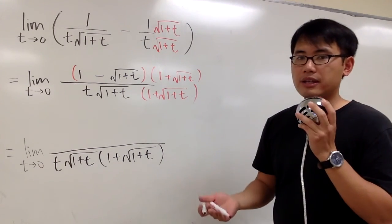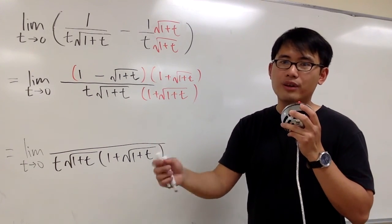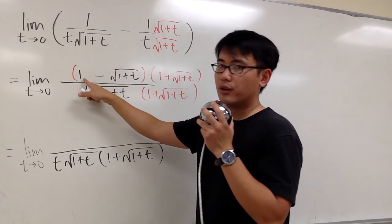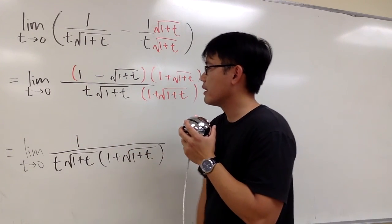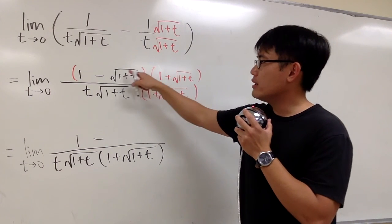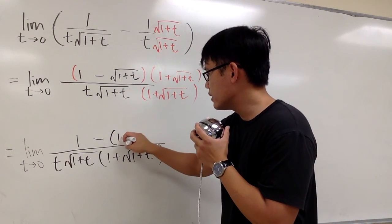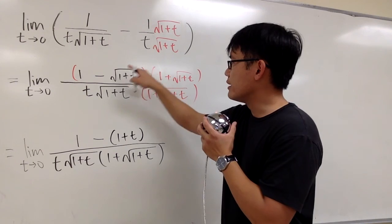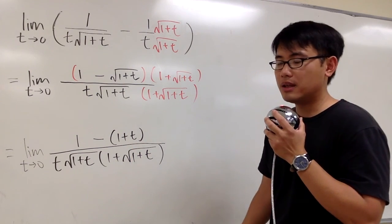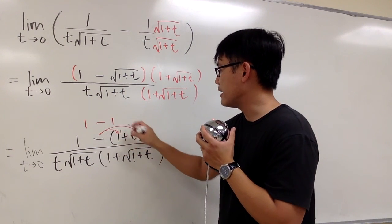For the top, when multiplying the conjugate, this is a minus b times a plus b, so the result is a squared minus b squared. We look at the first term, which is 1, and square it — 1 squared is 1. Then we subtract the second term, the square root of 1 plus t, and square that as well. The square and square root cancel, leaving just 1 plus t in parentheses. So we have 1 minus 1 plus t in the numerator, which is the full a squared minus b squared.